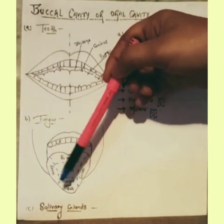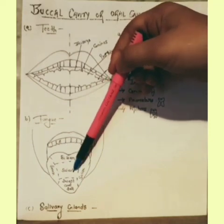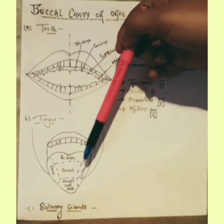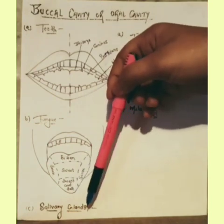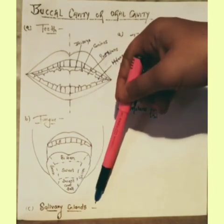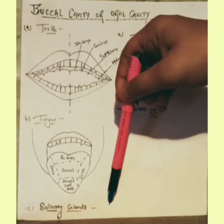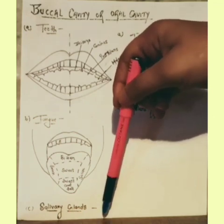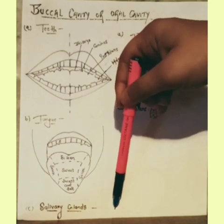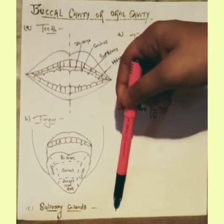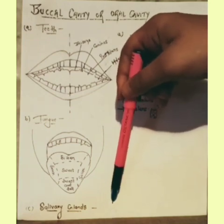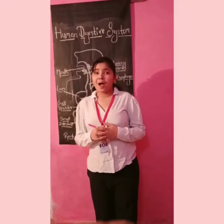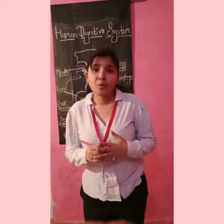The tongue can distinguish four types of taste in food: salty, sour, bitter, and sweet. It also enables us to speak. The salivary glands produce saliva. Saliva contains an enzyme called amylase that breaks down the starch present in food into sugar. Saliva also makes the food wet and slimy so that it can be easily swallowed.